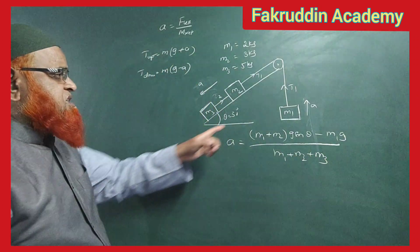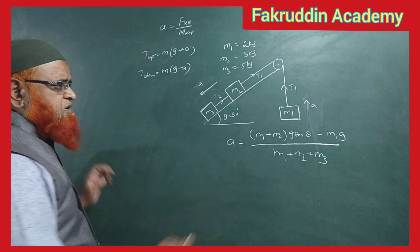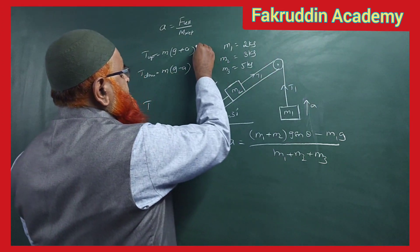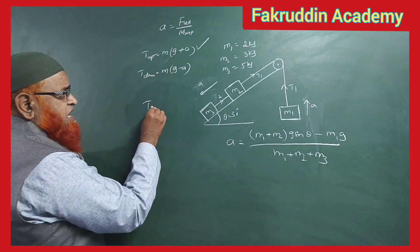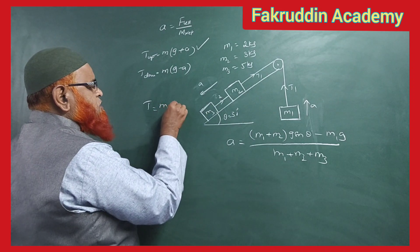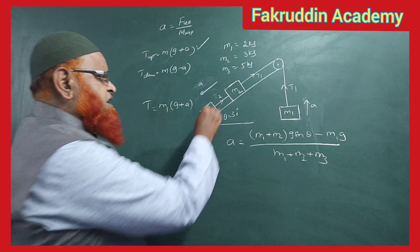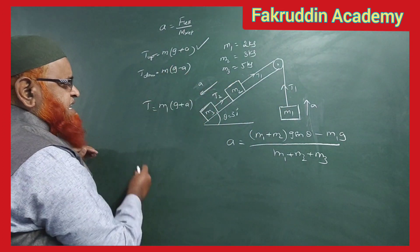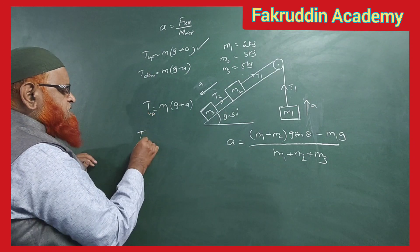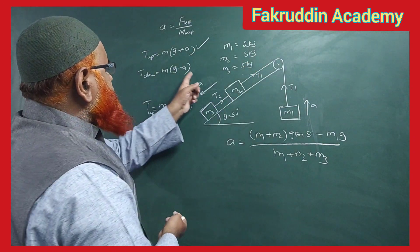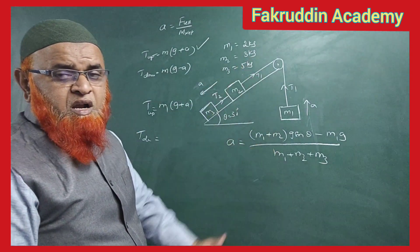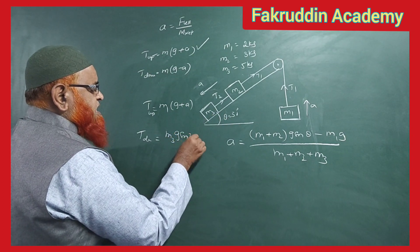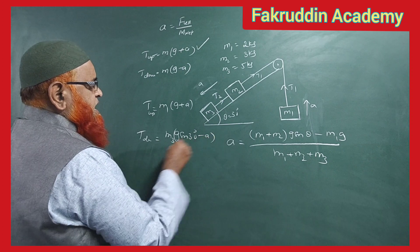To find tension T1 and T2: T1 is for the hanging block moving upward, so T1 = m3·(g+a). For tension T2, the inclined block is coming downward on an inclined plane, so instead of g we take the component: T2 = m3·g·sin30° − m3·a.